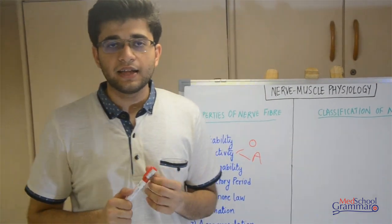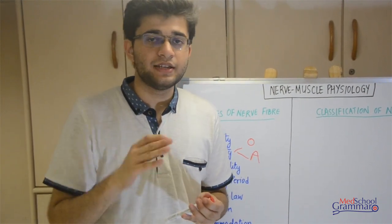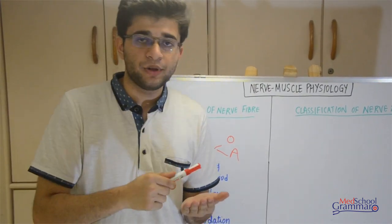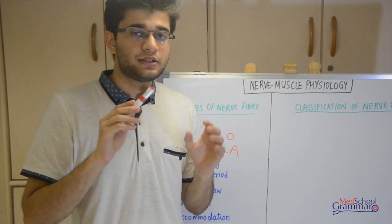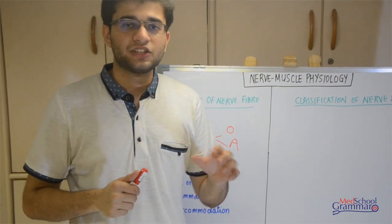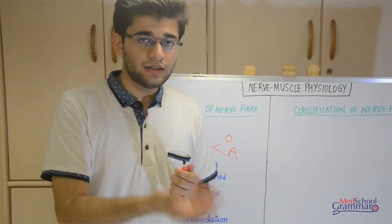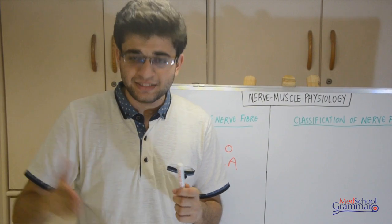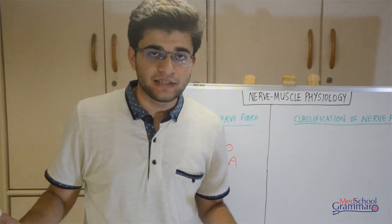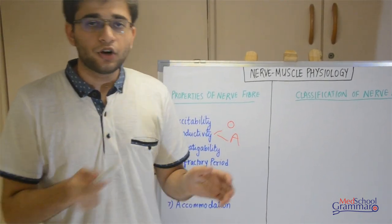The fifth property is the all-or-none law. If a stimulus is above threshold, a maximal response is initiated regardless of how high the stimulus is. For example, if the threshold is 40 millivolts and stimuli of 50, 60, and 70 millivolts are applied, the responses obtained for all three are identical.